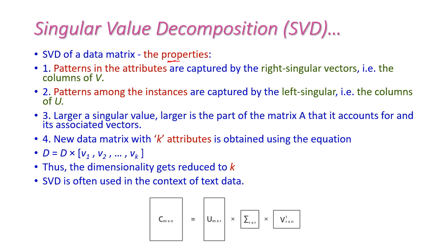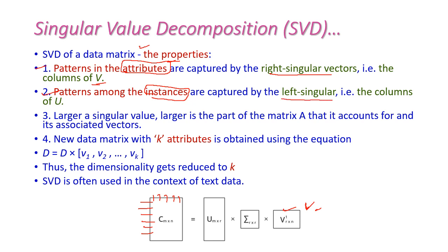Next, let us see the properties of SVD. The first property: patterns in the attributes — that is, the dataset attributes, which are the columns — are captured by the right singular vector, meaning the columns of the V matrix. The second property: patterns among the instances, which are the rows or records of the dataset, are captured by the left singular vectors, that is the columns of the U matrix.